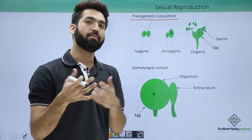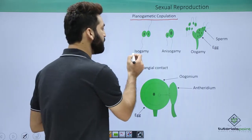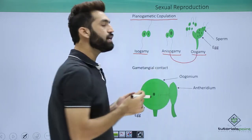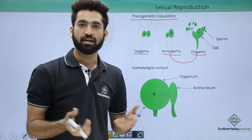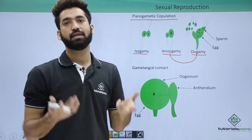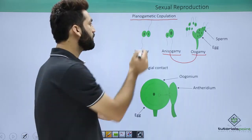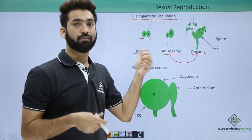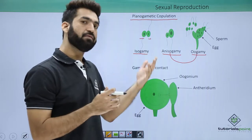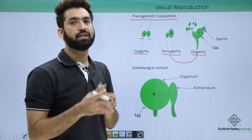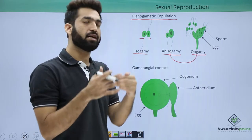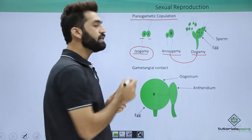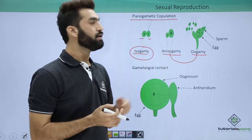Planogametic copulation can occur with similar or dissimilar gametes. There are three sub-types: isogamy, anisogamy, and oogamy. The latter two are called heterogamy, meaning gametes are different. In isogamy, both gametes are similar in size, whether flagellated or non-flagellated.